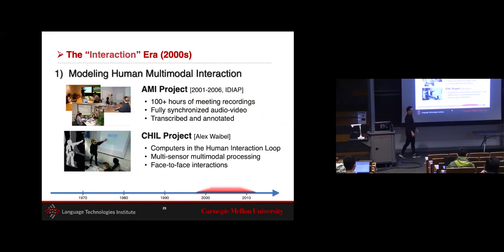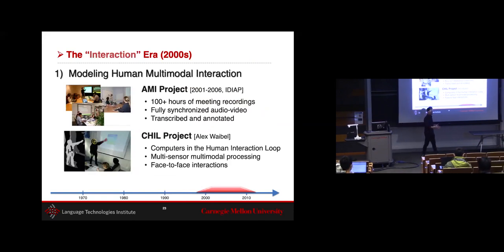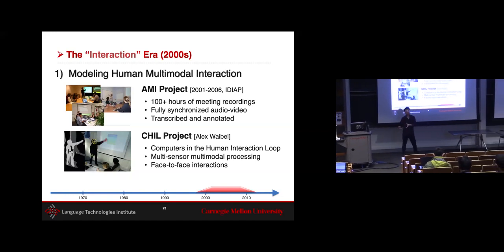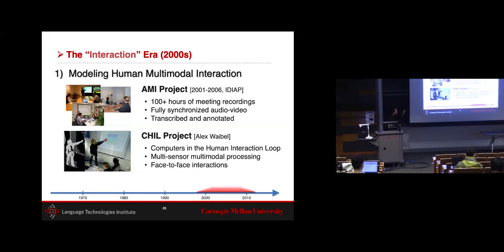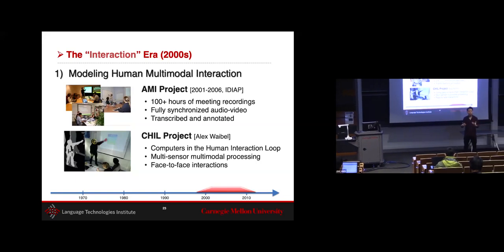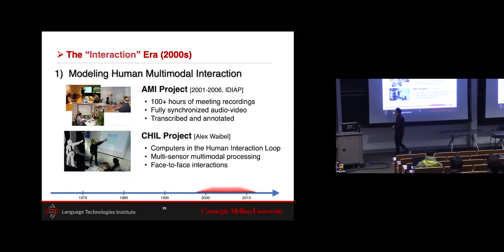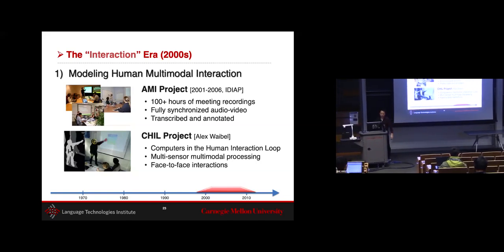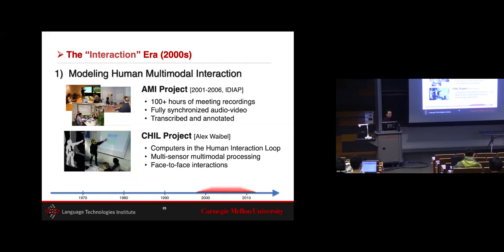In the early 2000s, people moved from static to interactive multimodal computing — modeling interactions between humans to understand how humans can interact with computers. Key projects included the AMI project, which collected hours of meeting recordings to study how humans interact, and various CMU projects on multi-sensor human-computer interaction.